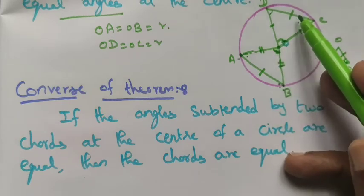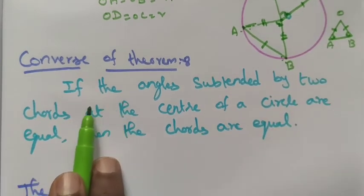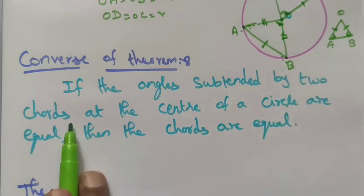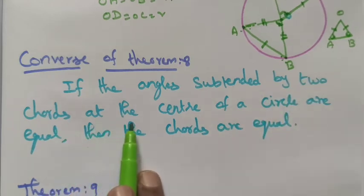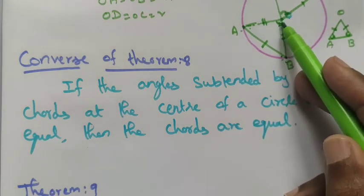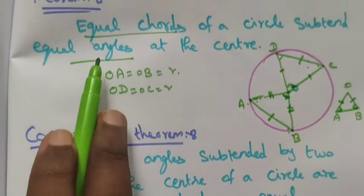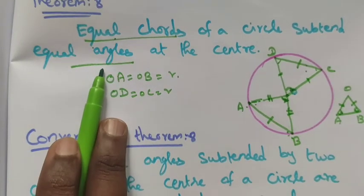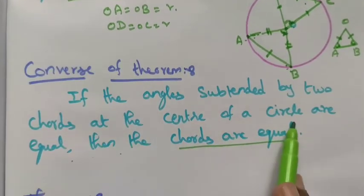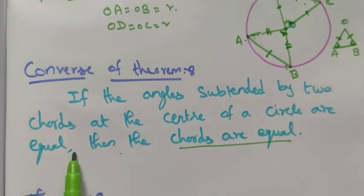If the angles subtended by two chords at the center of the circle are equal, then the two chords are equal. So: equal chords give equal angles at the center, and conversely, if the angles subtended by two chords are equal, then the chords are equal.